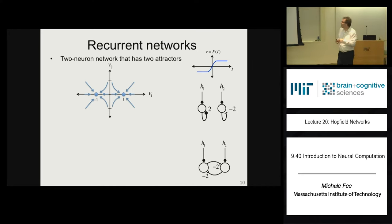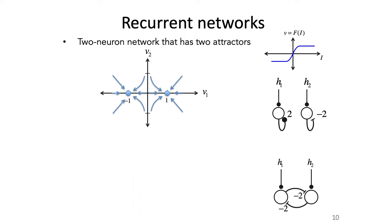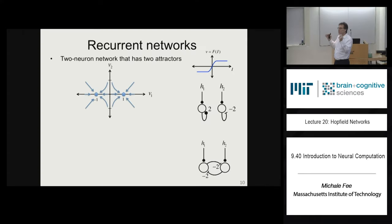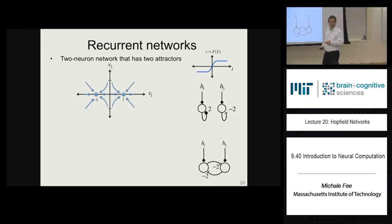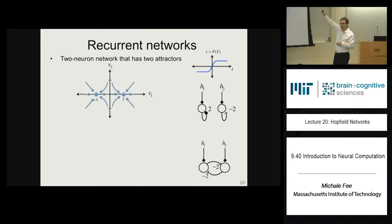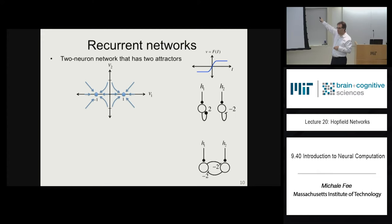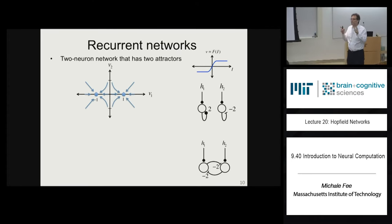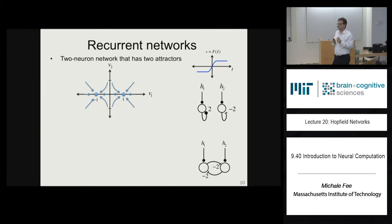Now instead of autapses, let's consider recurrent cross-connections of strength minus 2 between two neurons. The weight matrix is [0, -2; -2, 0]. The eigenvalues are 0 plus (minus 2) and 0 minus (minus 2), giving eigenvalues of 2 and minus 2 — the same as before. But the eigenvectors are the 45-degree lines rather than the x and y axes. So the attractors of this mutually inhibitory network are rotated 45 degrees, sitting at (1, minus 1) and (minus 1, 1).